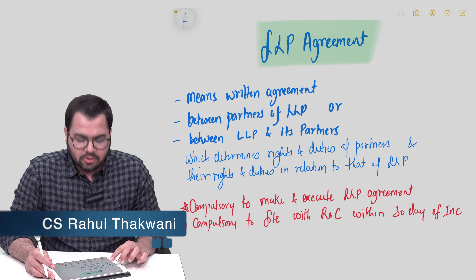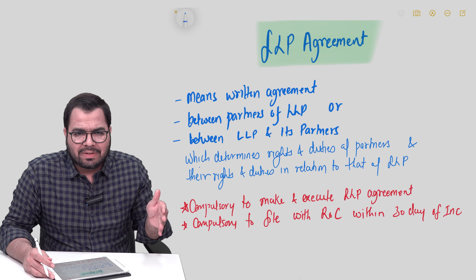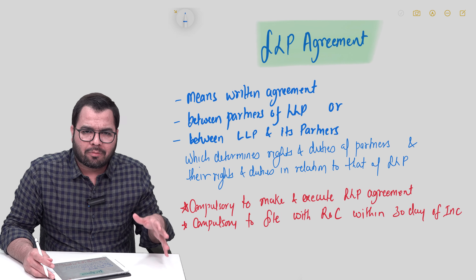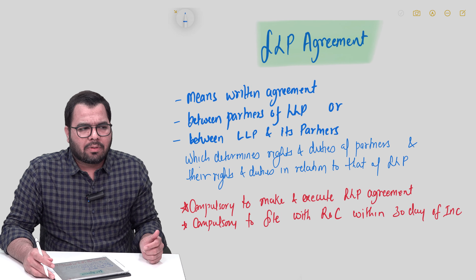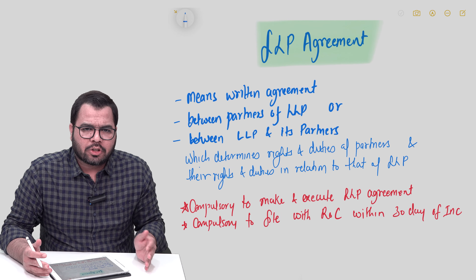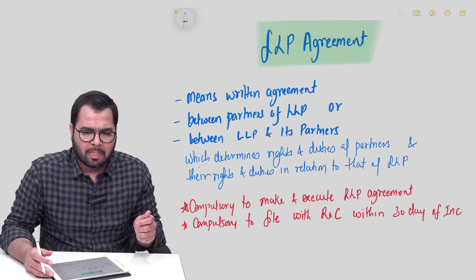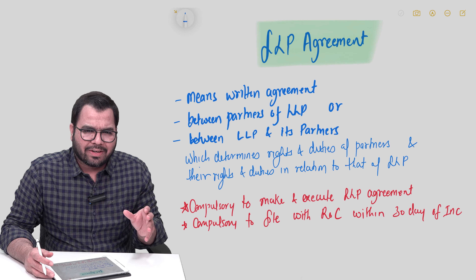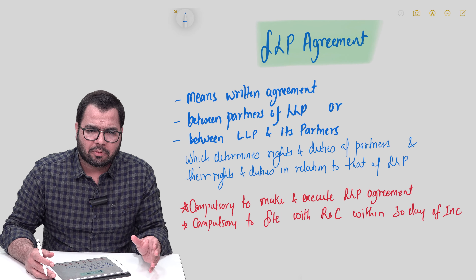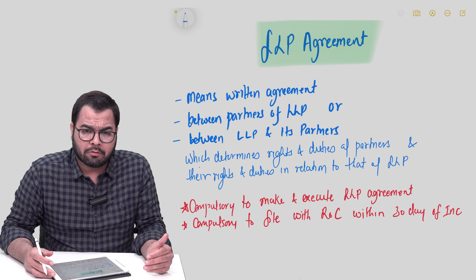Let's talk about LLP agreements. Yesterday we discussed how LLPs can be incorporated, the various forms and formalities. The main form for incorporation was FiLLiP. We also talked a little about the LLP agreement, mentioning that once the LLP has been incorporated, the LLP agreement has to be formally filed with the ROC in Form 3.